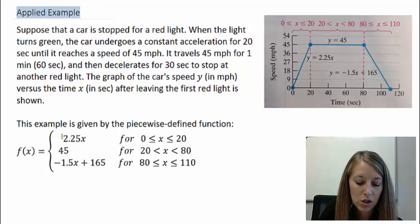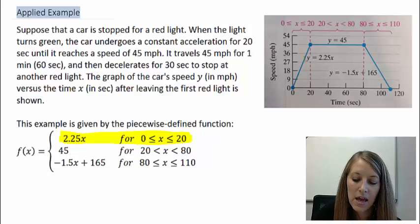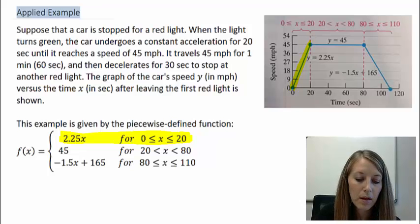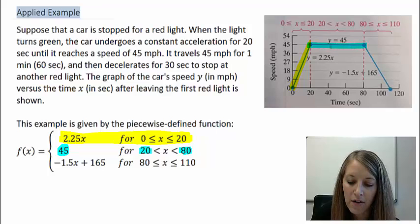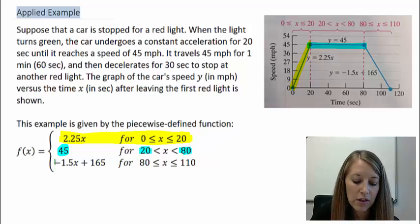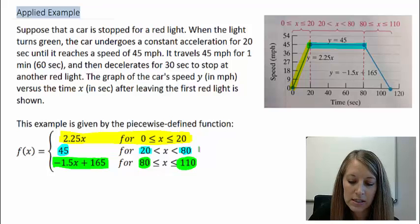To write a function describing this, we need three different pieces. The first piece, 2.25x, represents when the car is accelerating from 0 to 20 seconds — that's this portion on the graph where the car is speeding up. The second piece is a constant 45 miles per hour, since the car doesn't fluctuate, and that occurs between 20 and 80 seconds. The last piece represents the car decelerating between 80 and 110 seconds.